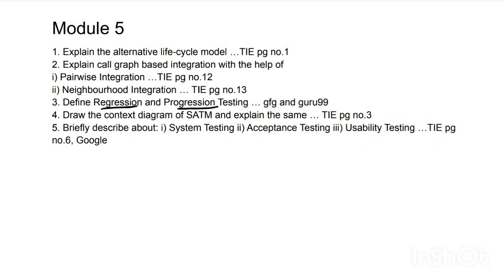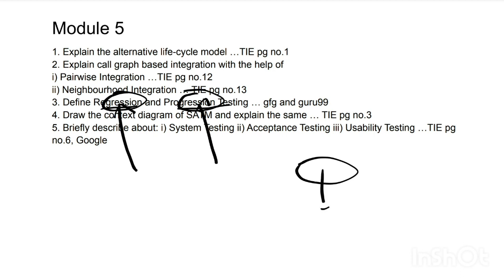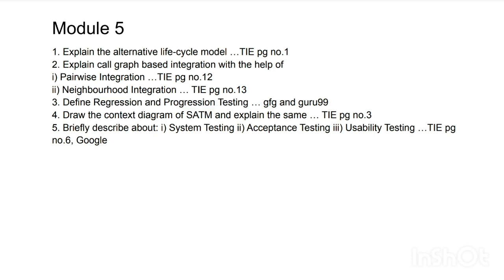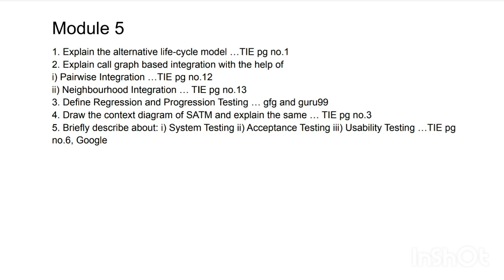The third Module 5 question is: define regression testing and progression testing. In regression testing, everything is tested at once; in progression testing, one feature is checked, then a new feature is added and the whole thing is checked again. These topics weren't found in the TKTG notes, so refer to Geeks for Geeks or Guru99 for information on each.